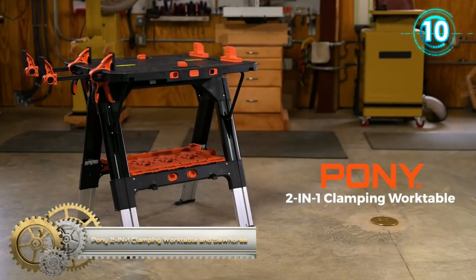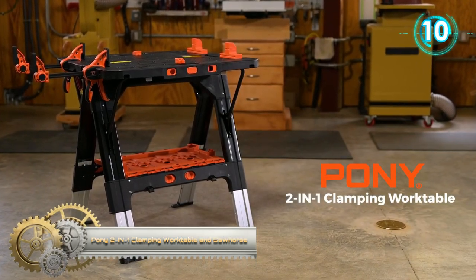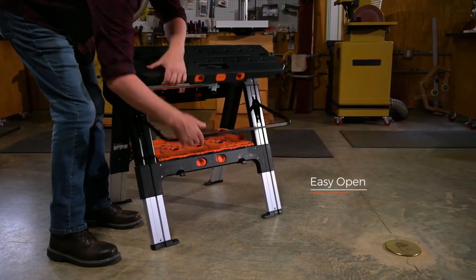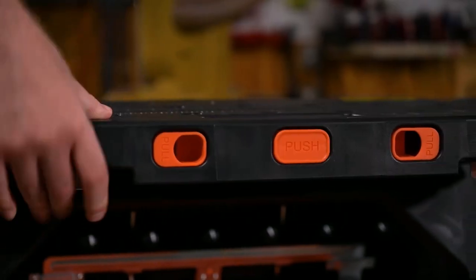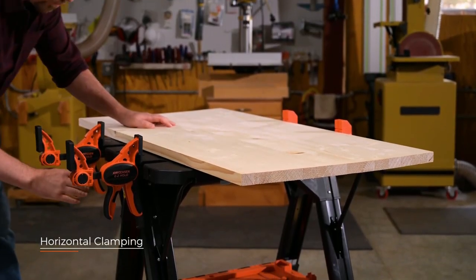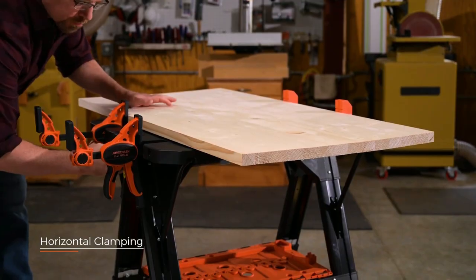Pony 2 in 1 Clamping Worktable and Sawhorse. Pony's 2 in 1 Clamping Worktable and Sawhorse features quick clamps and holding pegs that can support up to 500 pounds as a table and up to 1,000 pounds as a sawhorse.